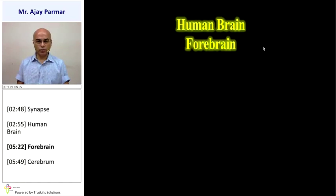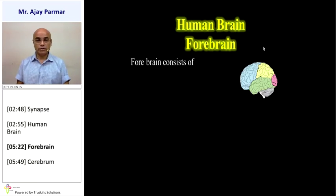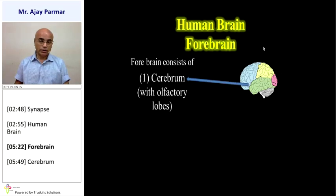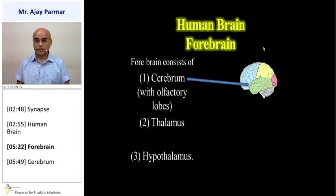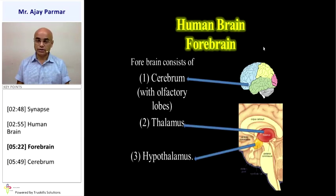Starting with the forebrain — it consists of various parts, beginning with the cerebrum. The cerebrum contains various olfactory lobes, which we will study in more detail later. The forebrain also consists of the thalamus and hypothalamus, which are present in the central part of the forebrain.